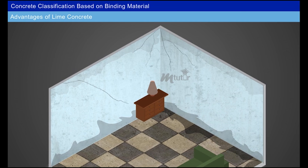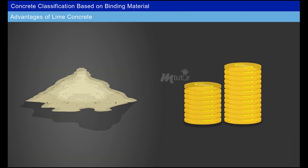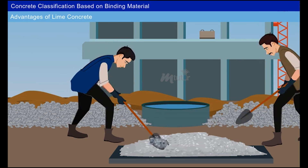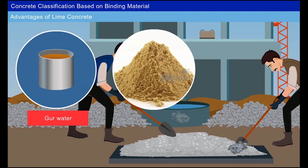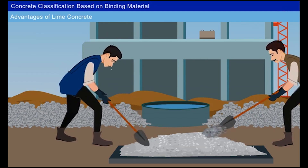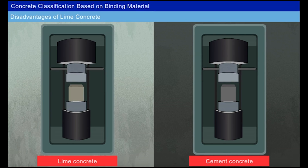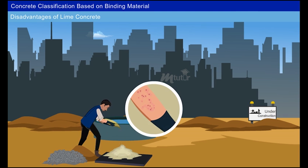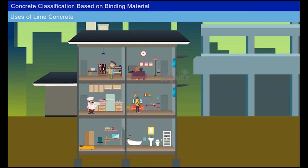Advantages of lime concrete: it prevents subsoil dampness in floors and walls, is available at a cheaper rate, and resists weathering effects. For achieving good quality, certain mixtures such as jaggery water, fenugreek powder, and fibers are sprinkled during final ramming and finishing. Disadvantages include that gaining of compressive strength happens over a very long period compared to cement concrete, and lime can cause rashes on human skin during mixing. Lime concrete is used as a foundation base of load-bearing walls, columns, and terrace finishing.